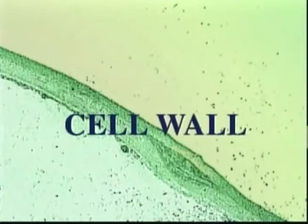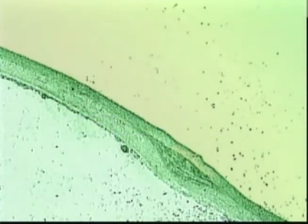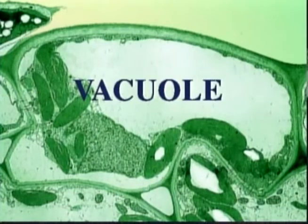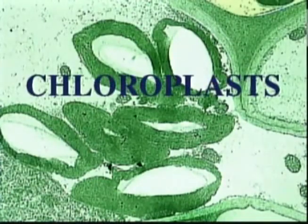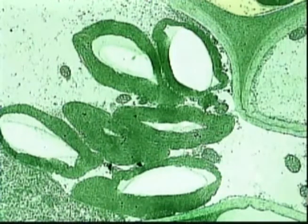Under the electron microscope, we see that plant cells contain several additional structures not generally found in animal cells. For example, many plant cells have a cell wall — a rigid layer that surrounds the membrane and provides support. The larger white area is called a vacuole, which stores material for use in the cell. These organelles are called chloroplasts. Chloroplasts allow plants to convert sunlight into food and energy, a process known as photosynthesis.